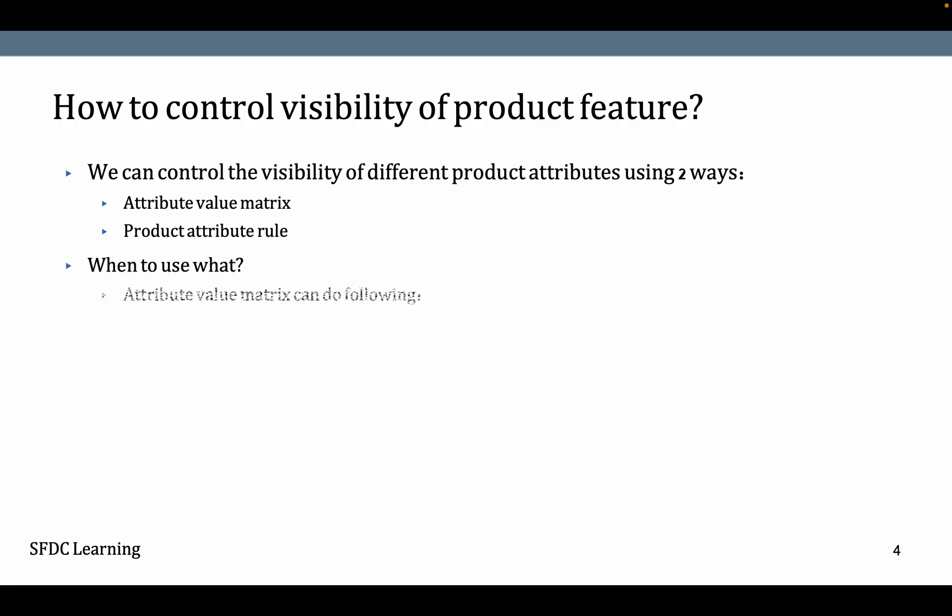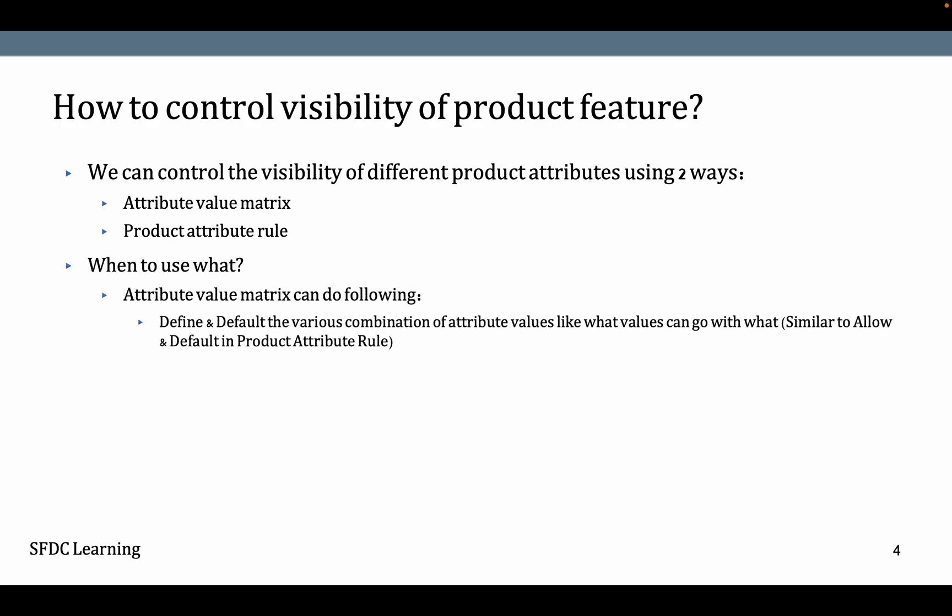When do you use which? Attribute value matrix can be used when you want to default some picklist values which can't be altered, and when you want to define the combination of attribute values. You can check that video on my playlist of Conga CPQ.